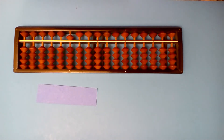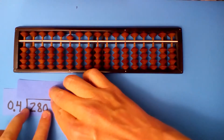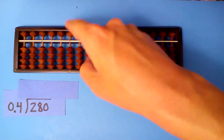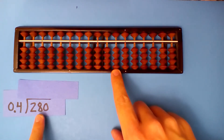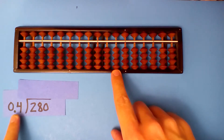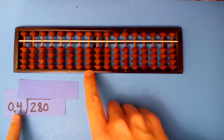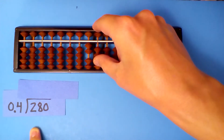Let's do a few more examples of division and learn how to place using decimal points. Look at this example: What is 280 divided by 0.4? Start on the hundredths — three digits, zero digits — so we go one, two, three to the left. Set up our dividend: 280.